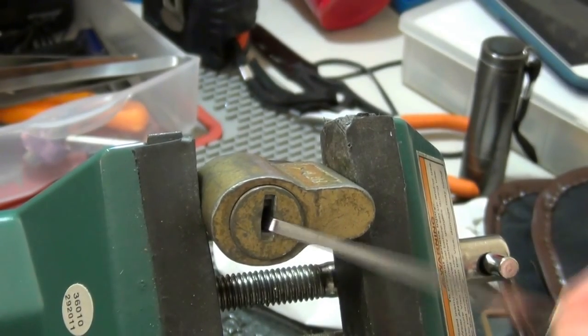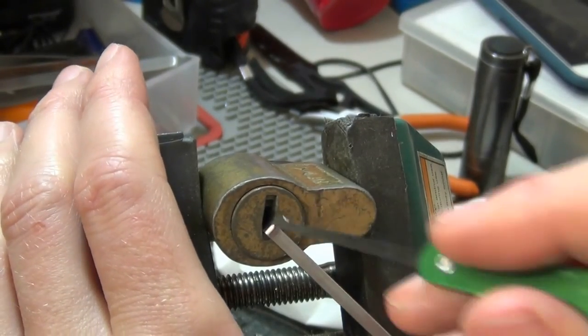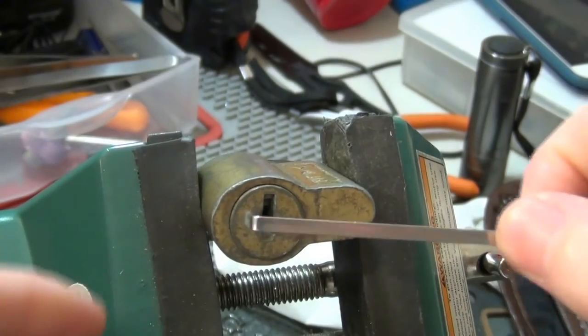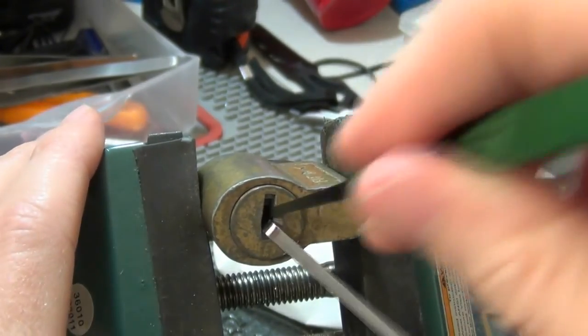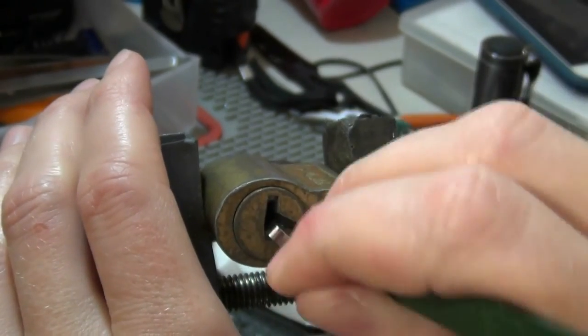You can already see how floppy the core is there. I'm going to try to put this all the way back without putting any tension on it, and then try to just kind of work it forward, almost like raking it.